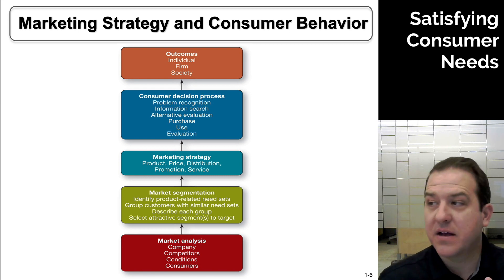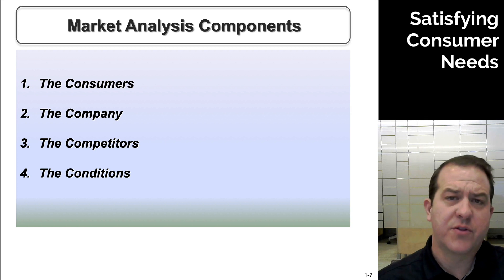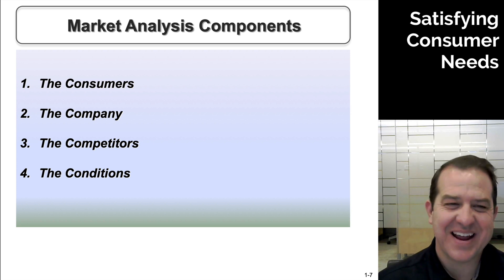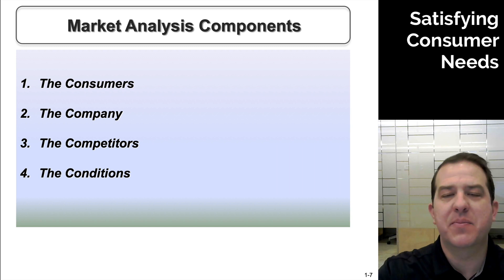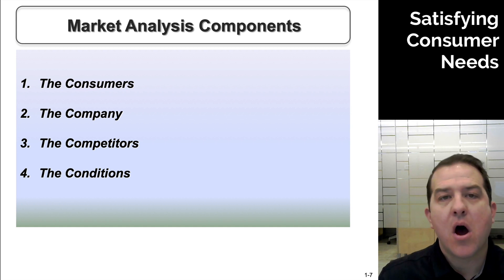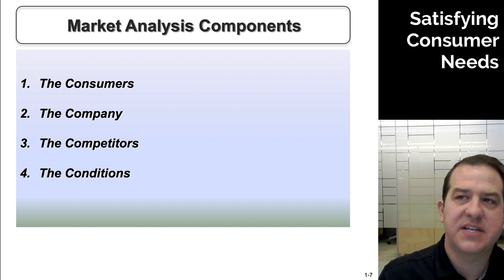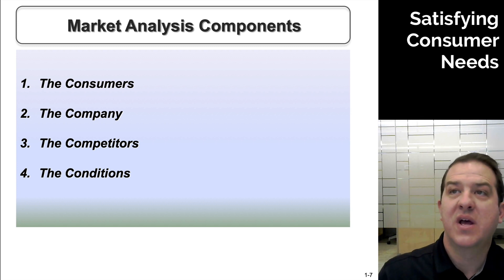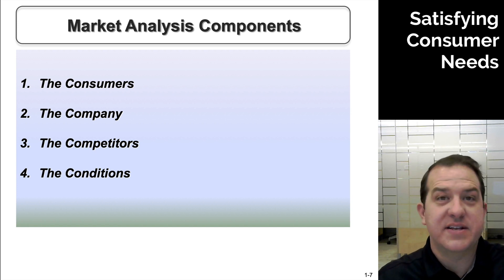As we go through the market analysis components, there are four aspects to cover. First, the consumers — we want to understand who is in this market and who is potentially trying to buy our products. Second, the company we're working with — are we capable of adapting to what the market requires? You could run a marketing campaign at a company and it might not be culturally acceptable, or you might not be able to get the digital processes working in time to launch the campaign you're thinking of.